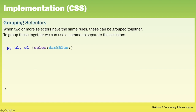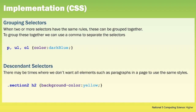When two or more selectors have the same rules these can be grouped together using a comma to separate the selectors. So in this case the paragraph, the unordered list and the ordered list will all be dark blue. With descendant selectors there may be times where we don't want all elements such as paragraphs on a page to use the same styles. For example the heading 2 within section 2 will be styled in yellow but other heading 2s will be untouched.